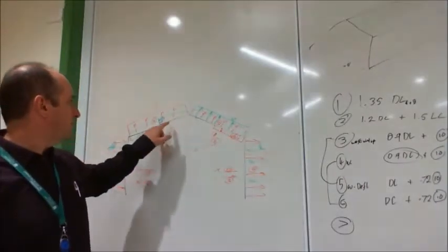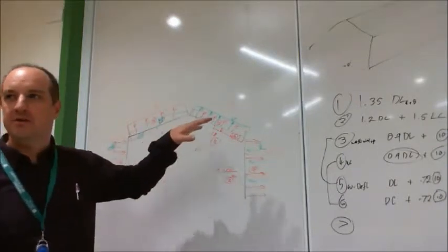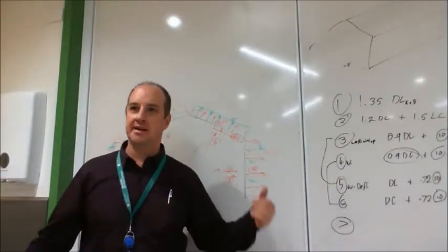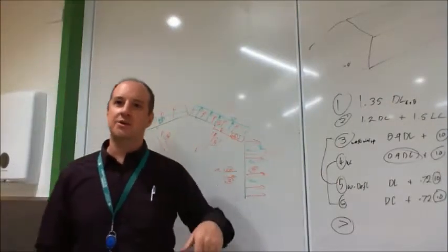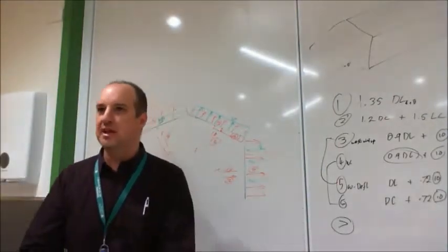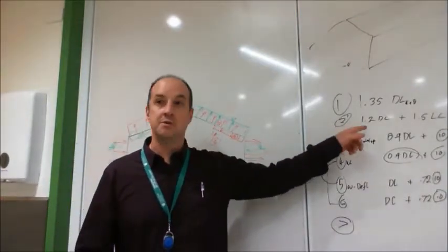Where you have, where the dead load is helping hold the structure down against uplift, you use 0.9 times the dead load. Where the dead load is adding to your problem, because everything's pushing down on it, that's where you use the 1.2.